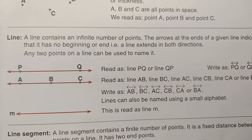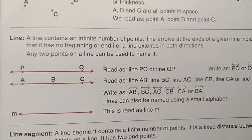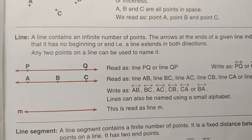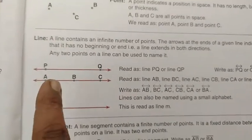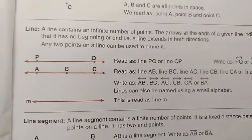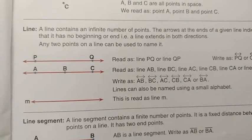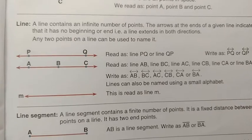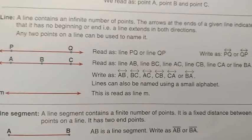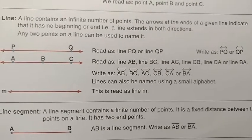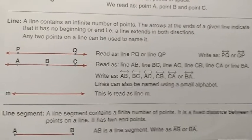Simply, what is the meaning of line? It has an infinite number of points. See here — P and Q both sides extend infinitely. Read as line PQ or line QP, denoted as PQ with a double-headed arrow above, or QP.